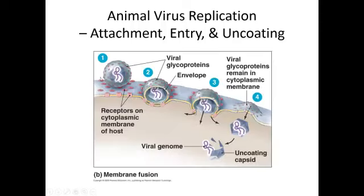Some enveloped viruses undergo membrane fusion, which means that their envelope fuses with the cellular membrane. The viral glycoproteins attach to the receptors in the cytoplasmic membrane of the host. Then this process of attaching also leads to fusion of the envelope. The glycoproteins are left on the cytoplasmic membrane, and the capsid enters the cell. Because we've got this protein coat, we've got to get the genome out — we call this uncoating. The capsid is broken down, the viral genome is released into the cytoplasm, and it goes on to synthesis.